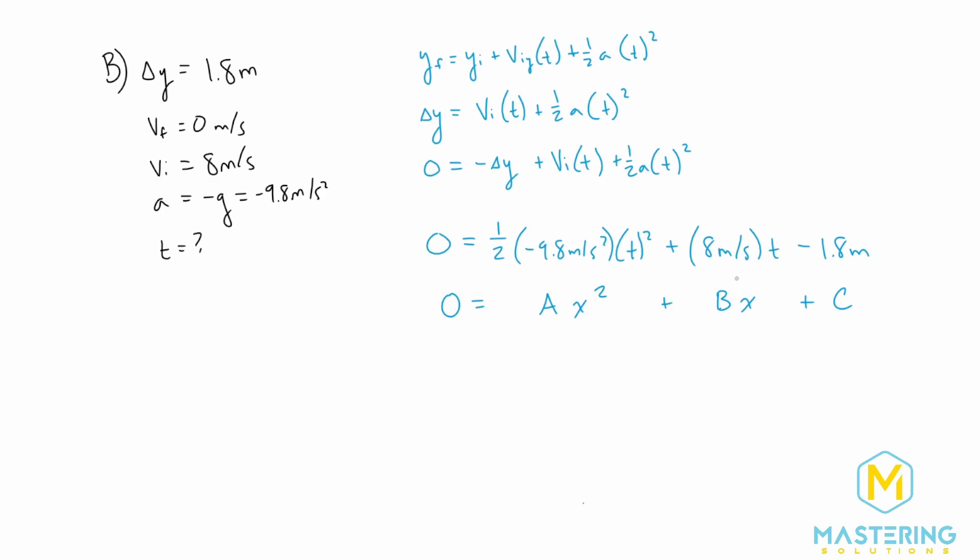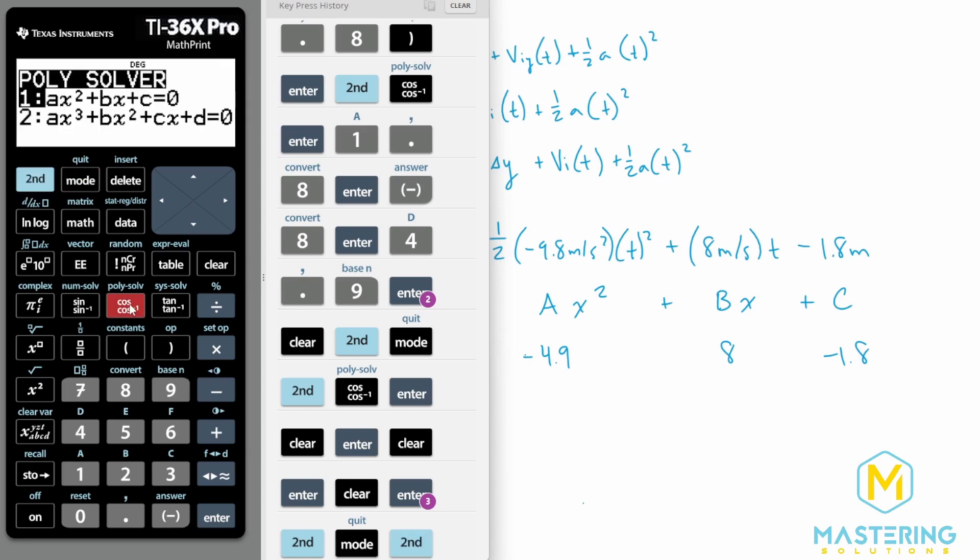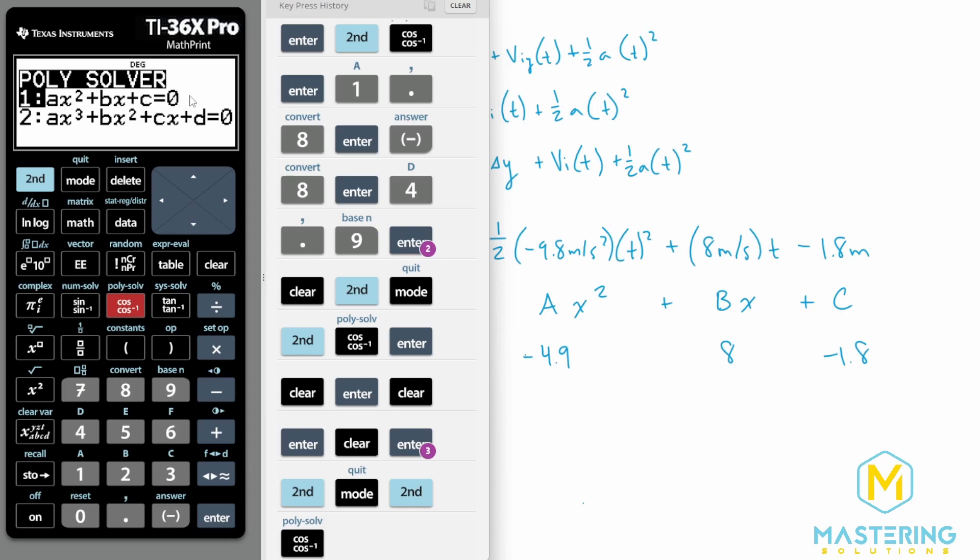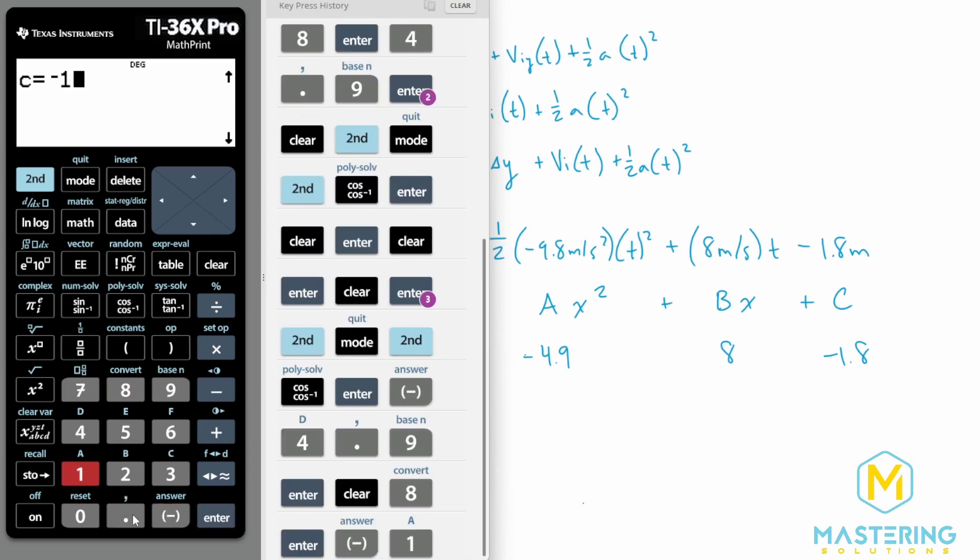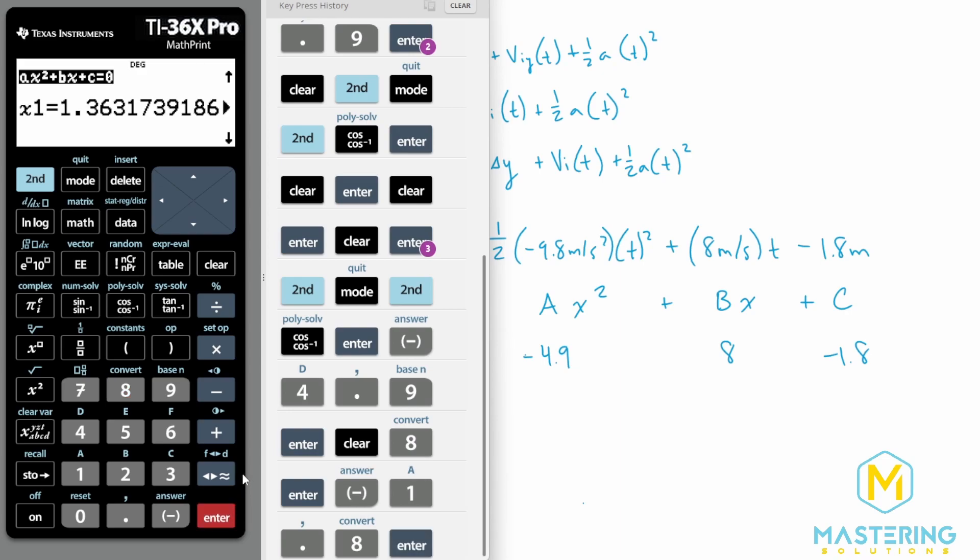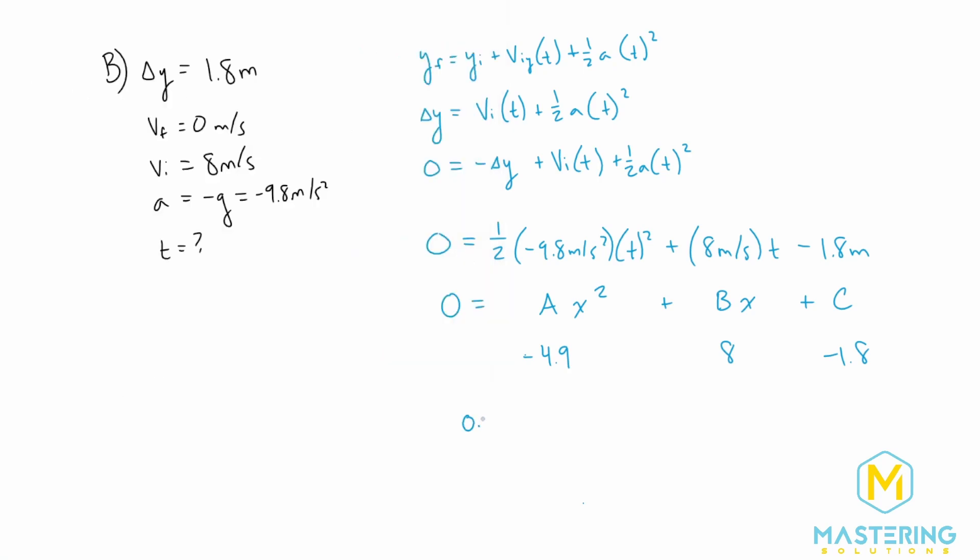So we have to use the quadratic to give us the time in this case. Our A is going to equal half of negative 9.8, so we have negative 4.9. Our B is positive 8 and our C is negative 1.8. Now when we go to our calculator we can go second and polysolver, and right here we have AX squared plus BX plus C equals 0. That's perfect, exactly what we need. For our A we have negative 4.9, for B we have 8, and for C we have negative 1.8. That gives us a time of either 1.4 seconds or 0.27 seconds.